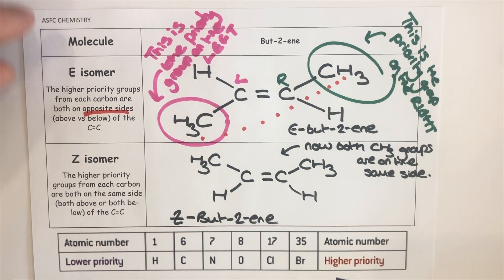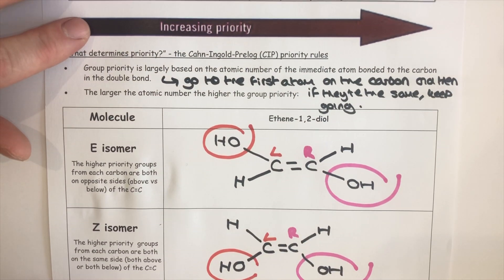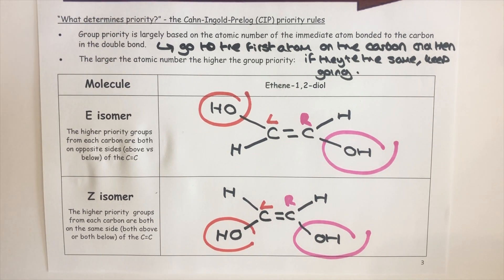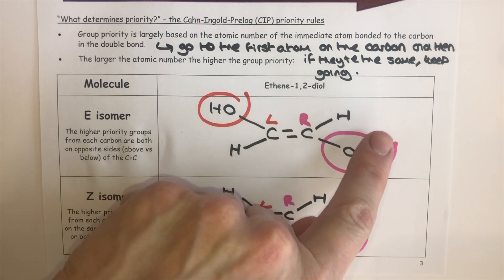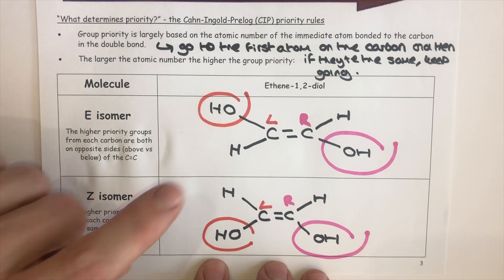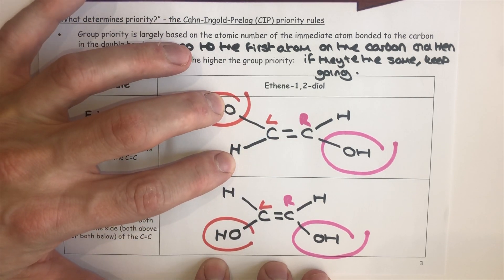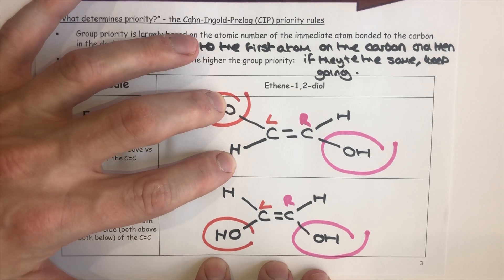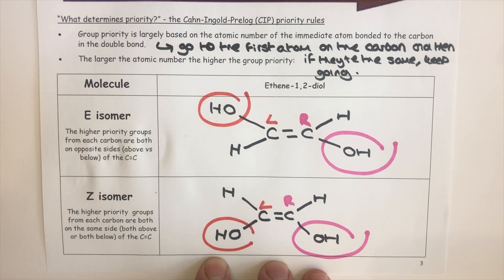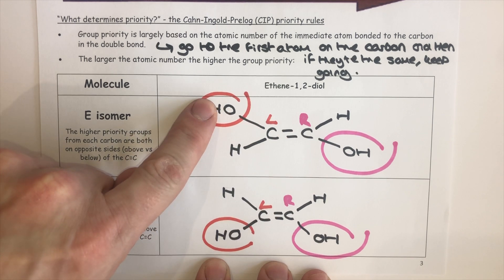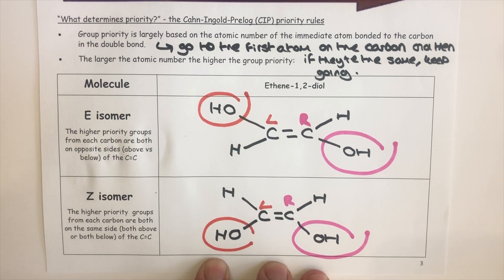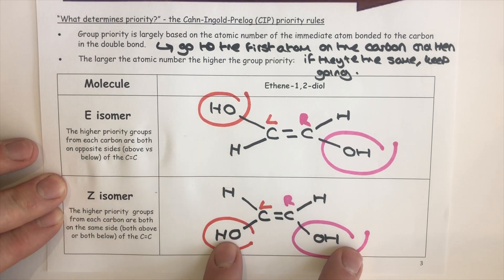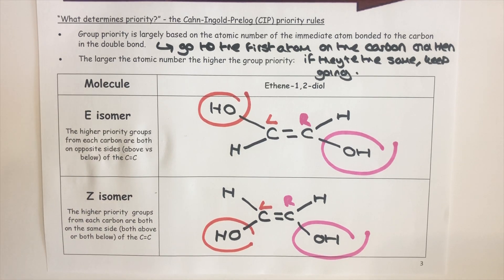Let's look at another EZ example using ethene-1,2-diol. Same as before, I go to each carbon one at a time. For the left-hand carbon, I compare O and H: oxygen has atomic number 8 versus hydrogen's 1, so the OH group is the high priority group. The same process on the right-hand carbon gives the same result. Because the two high priority groups are across from each other, this is an E isomer. Flipping one side gives both OH groups on the same side — both high priority groups together — making that the Z isomer.